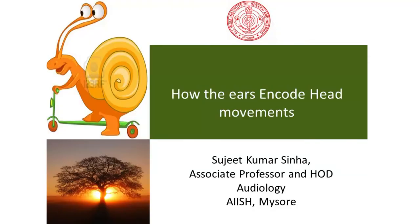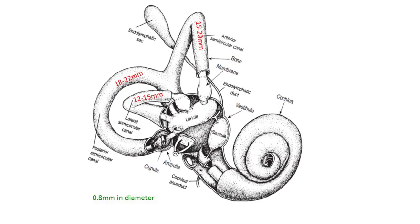This is our inner ear. Whenever I describe my patients, I don't say they have a vestibular disorder — I tell them they have an inner ear disorder because both are part of the same system. Looking at the structure of the three semicircular canals, the total length is only 15 to 20 mm and the diameter is only 0.8 mm. These are very narrow channels where fluid is not going to move easily with every stimulus.